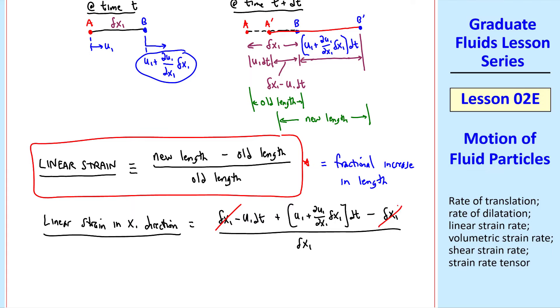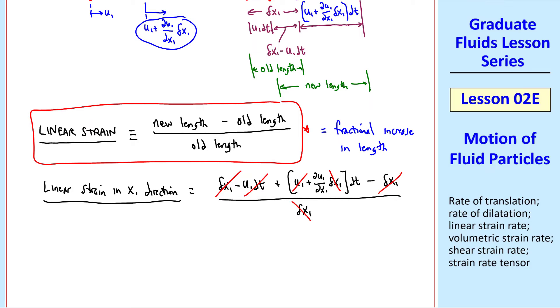Well this cancels this, and negative u1 dt cancels a positive u1 dt. Then the delta x1's canceled, and all we're left with is del u1 del x1 dt. Note that we let delta x1 shrink to zero, so we're really talking about the linear strain at a point.